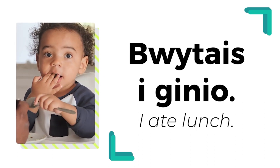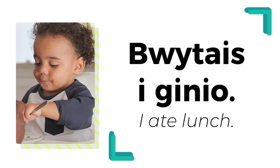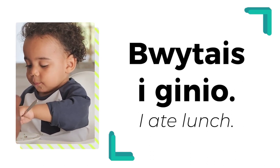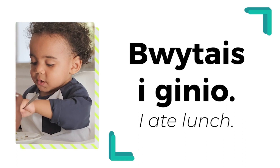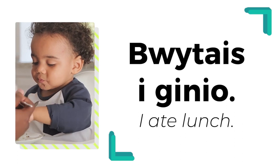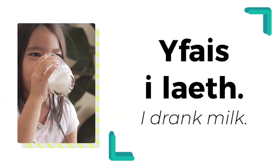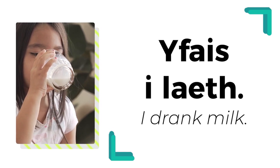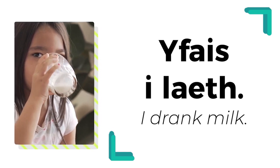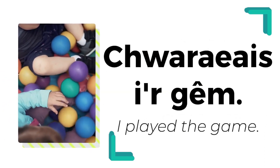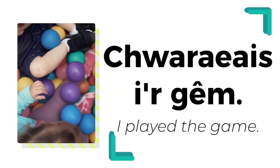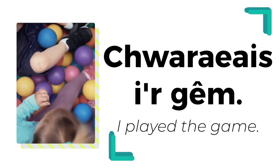With this form, we add an ending to the stem of the verb in order to conjugate verbs in the past tense. Er enghraifft — for example: Bwytais i cinio — I ate lunch. Yfais i laeth — I drank milk. Chwareiais i'r gêm — I played the game.